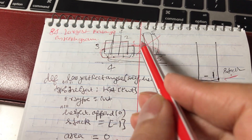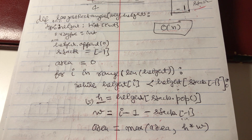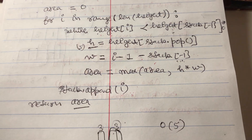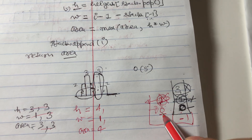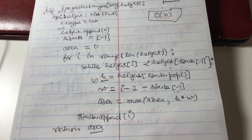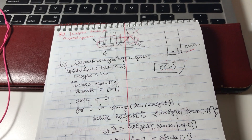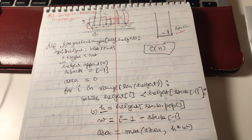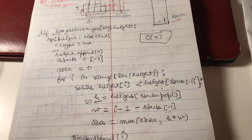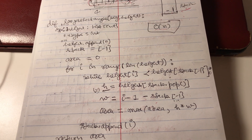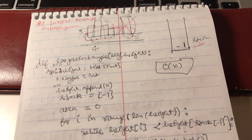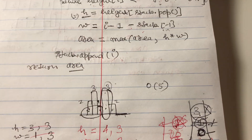Then i equals 3 and height at index 3 is 1, which is less than height at index 0, which is 3. The condition is satisfied. Height is 3, and width is i minus 1 minus the stack top. Since there is nothing left in the stack, it is 3 minus 1, which equals 2. The area is now 6.